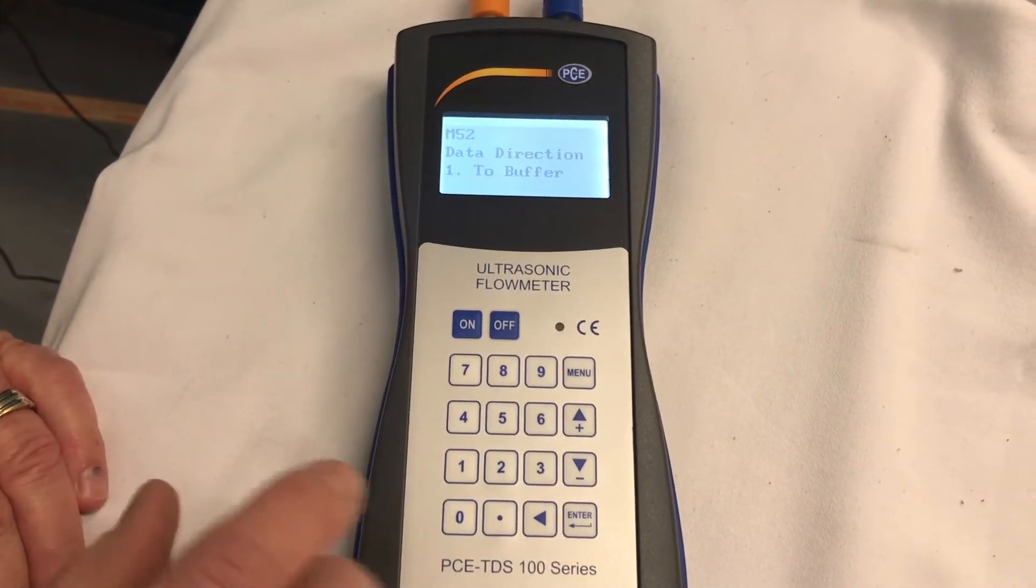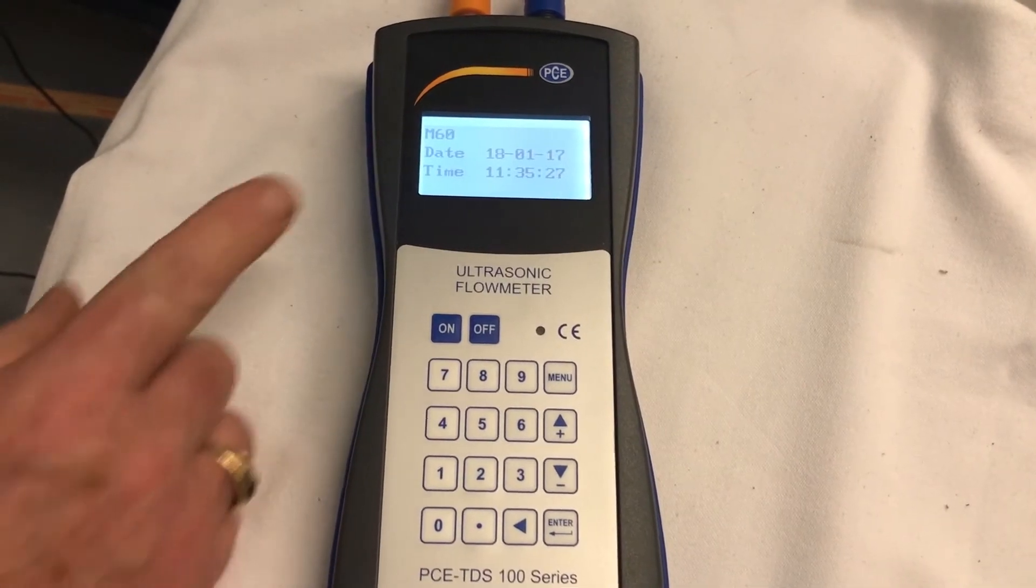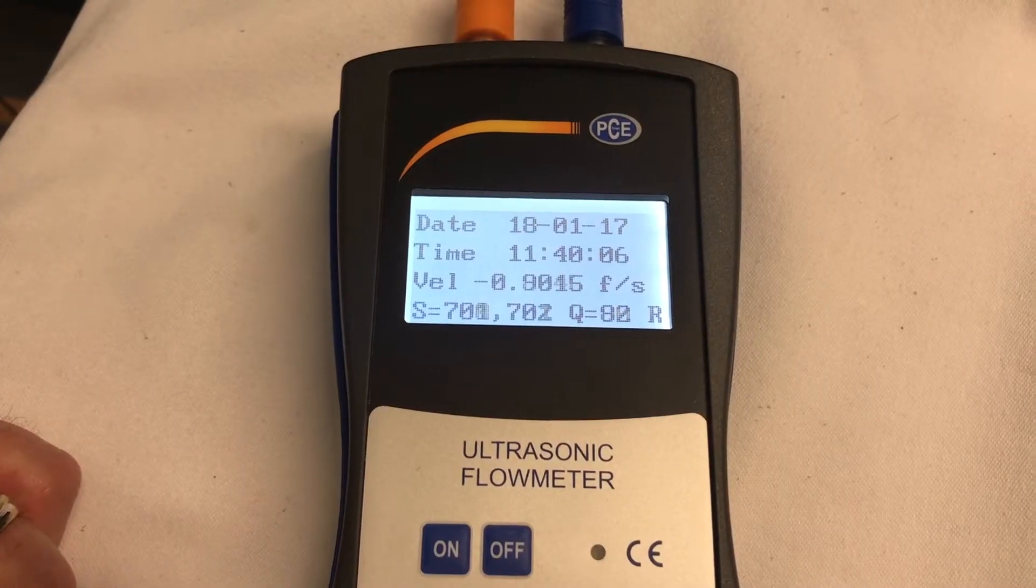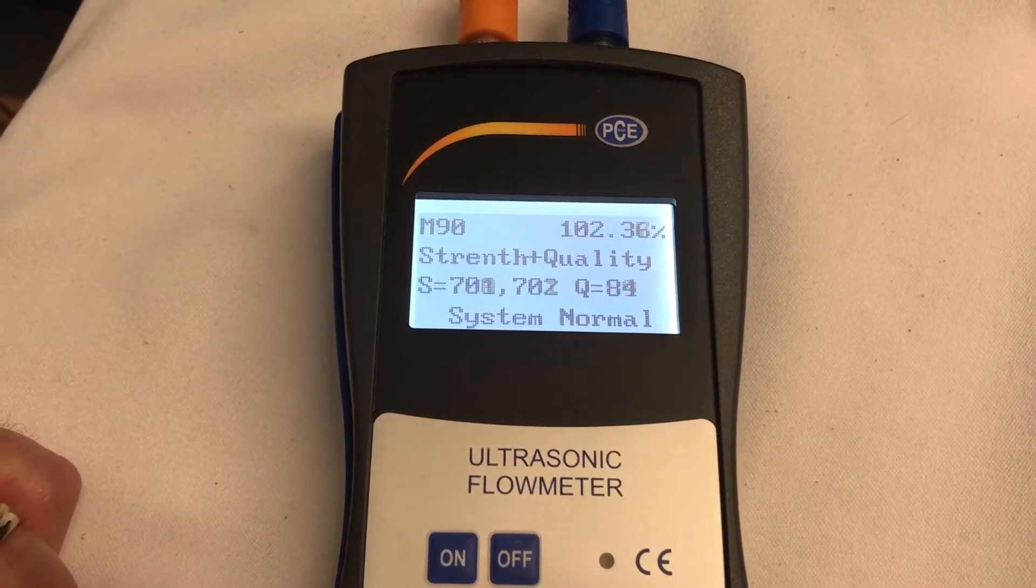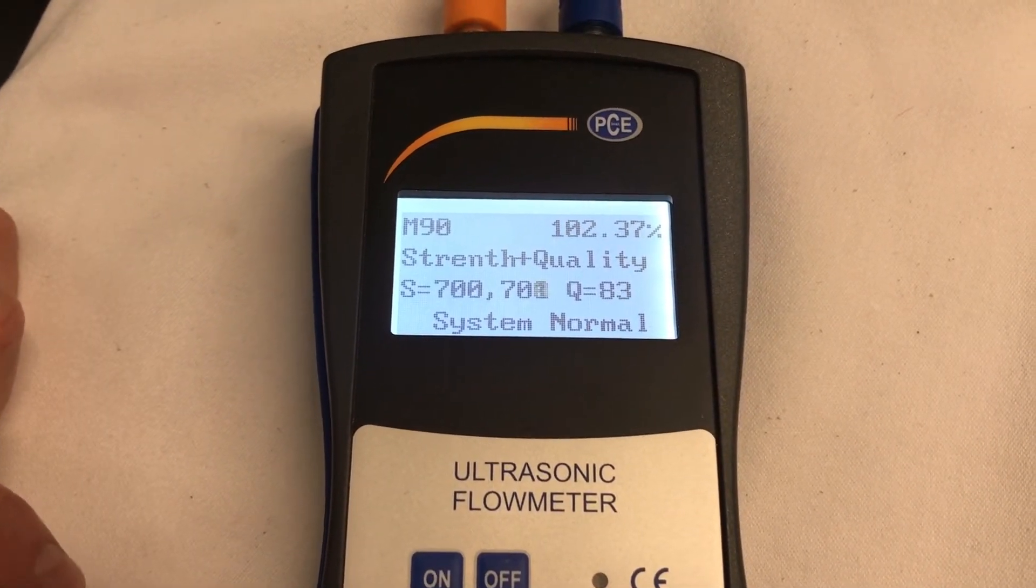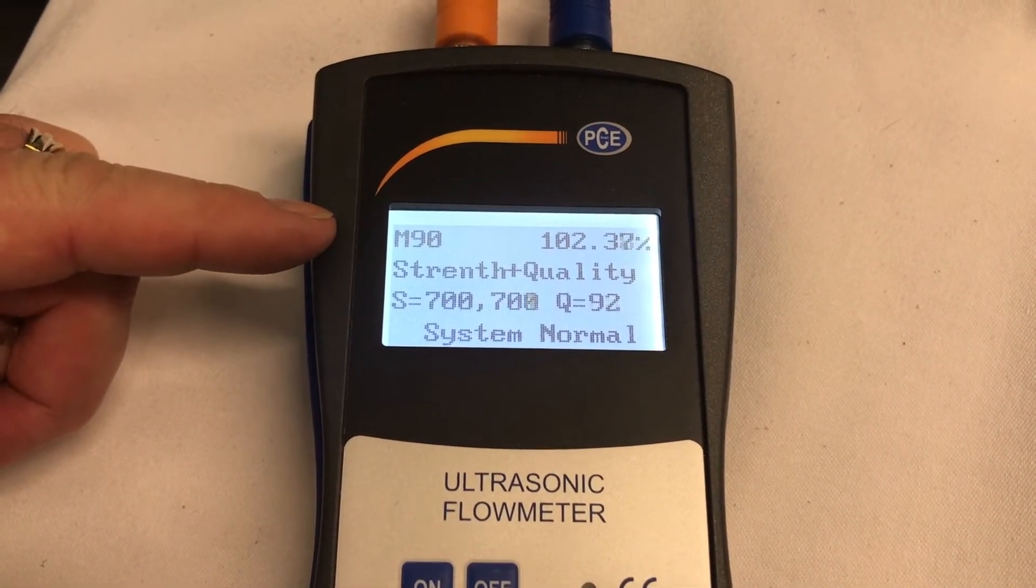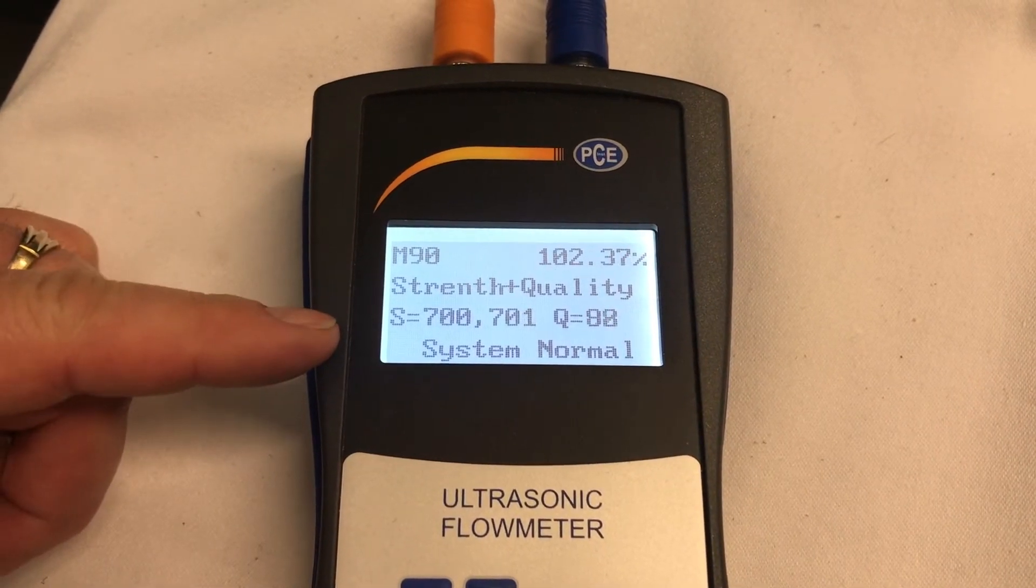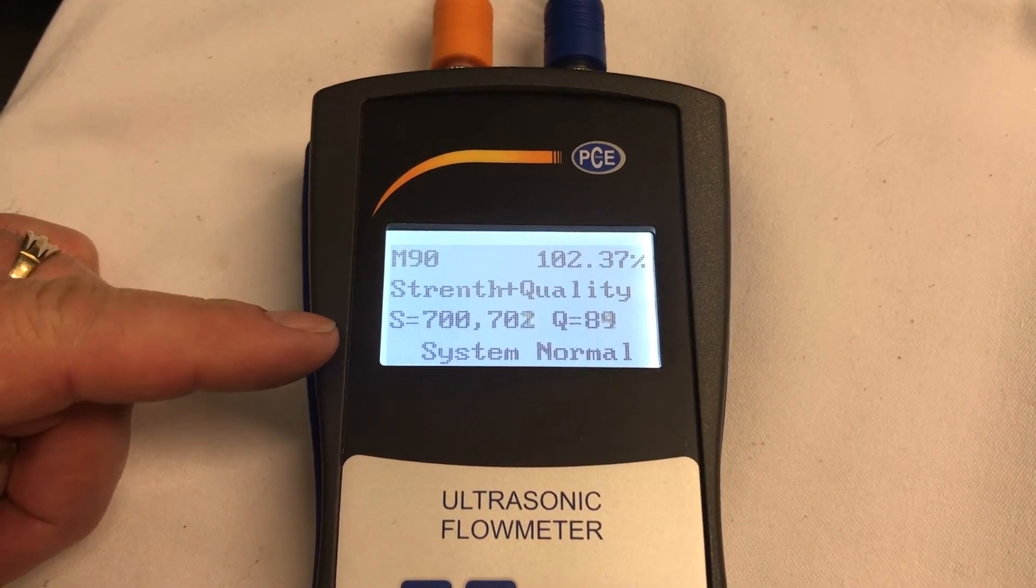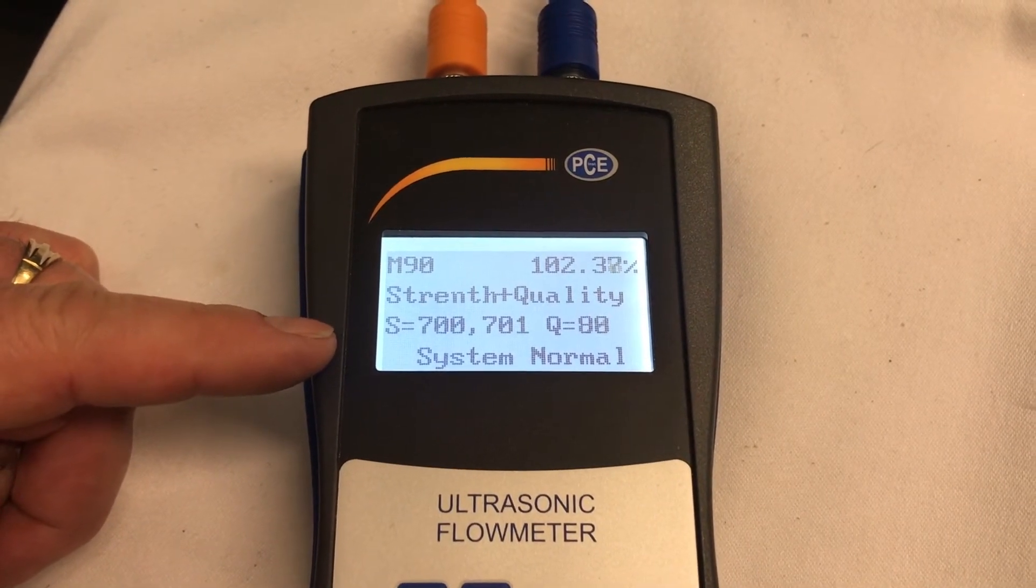Next, we'll go to M60, menu 60, which is the date and time. Next, we go to M90, which is time constant. The time constant on M90 has to be 100%. And the signal strength is greater than 700. And the signal quality is greater than 60.